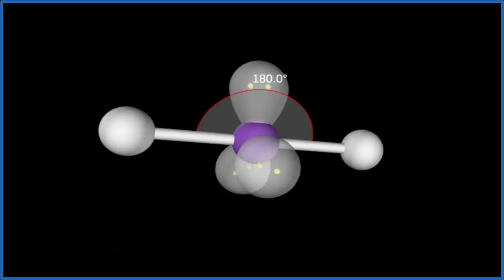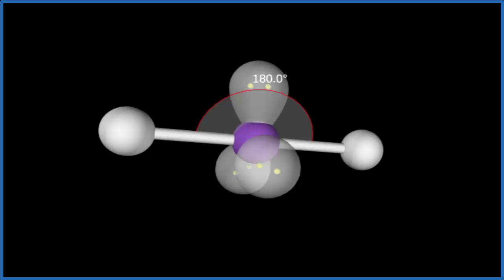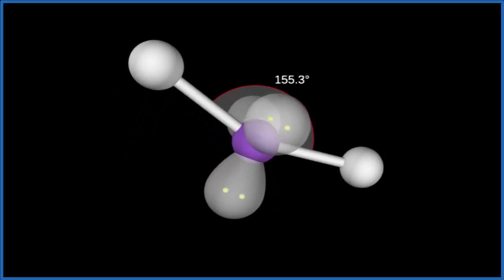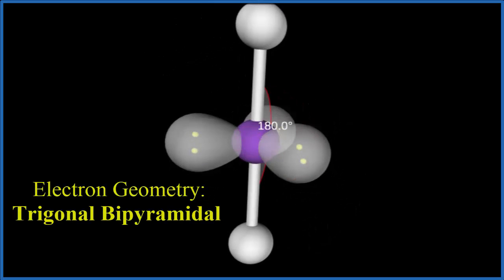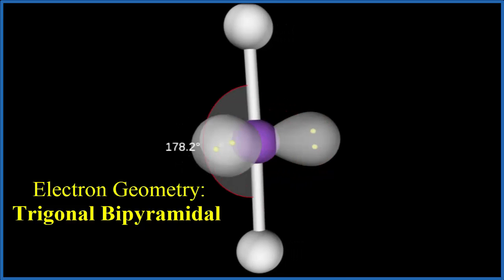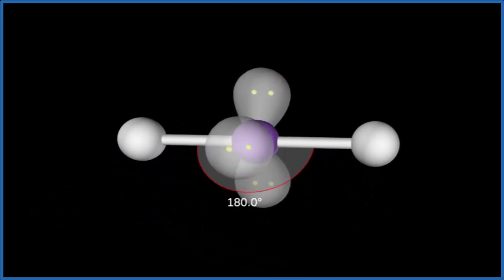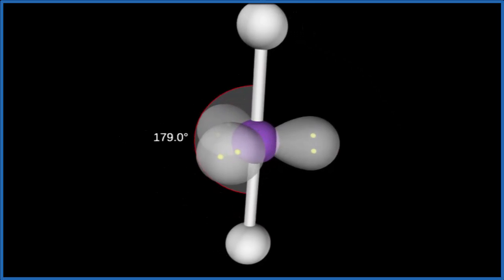If we want to look at the electron geometry, we have to take into account these lone pairs. We end up with what's called a trigonal bipyramidal electron geometry. So the molecular geometry is linear, a straight line. But the electron geometry is trigonal bipyramidal.